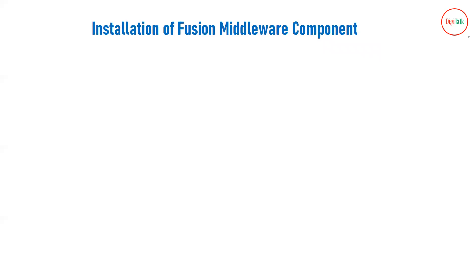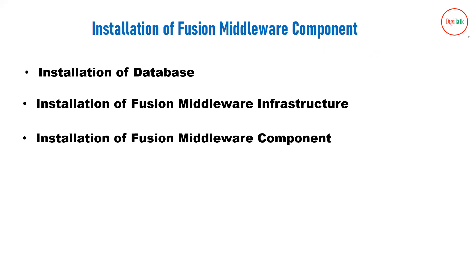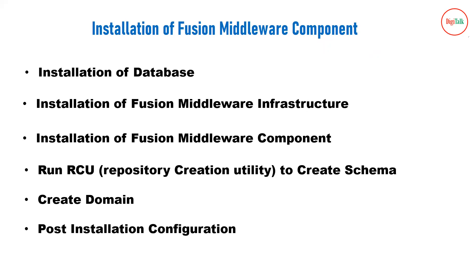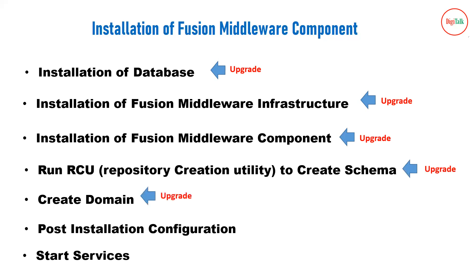Before the upgrade, let us review the installation path for fusion middleware components. First you install the database, then the fusion middleware infrastructure, then the middleware components like SOA, WebCenter, etc. Then you run the Repository Creation Utility to create schemas, create the domain, perform post-installation configurations, and start services. During the upgrade, you must upgrade all of these components: the database, the fusion middleware infrastructure (WebLogic framework), the middleware components, the schemas, and the domain.